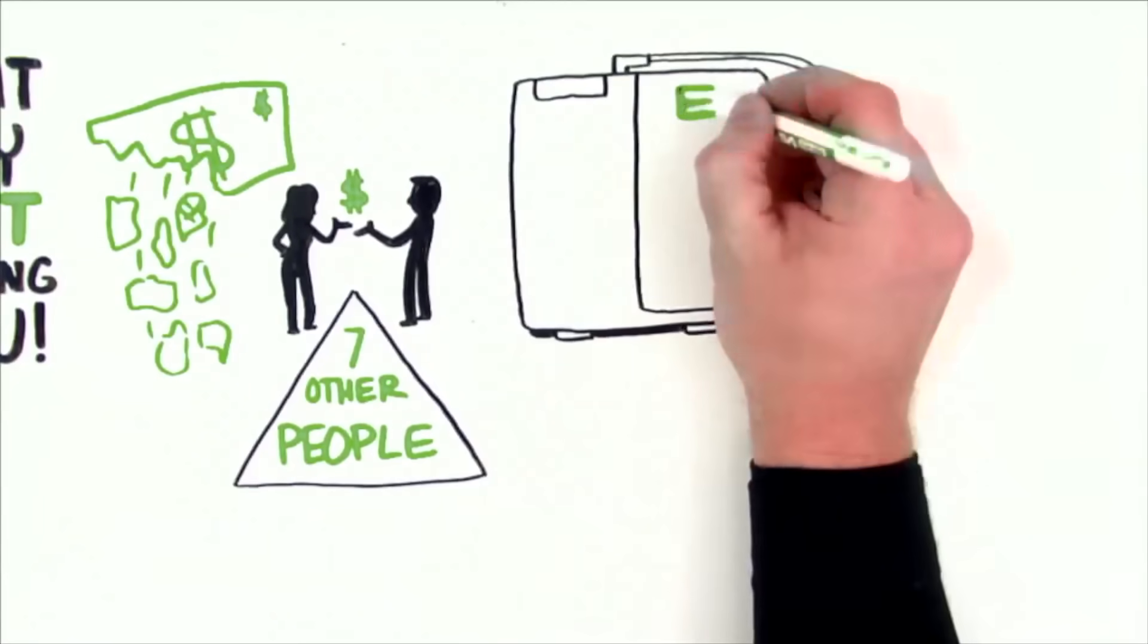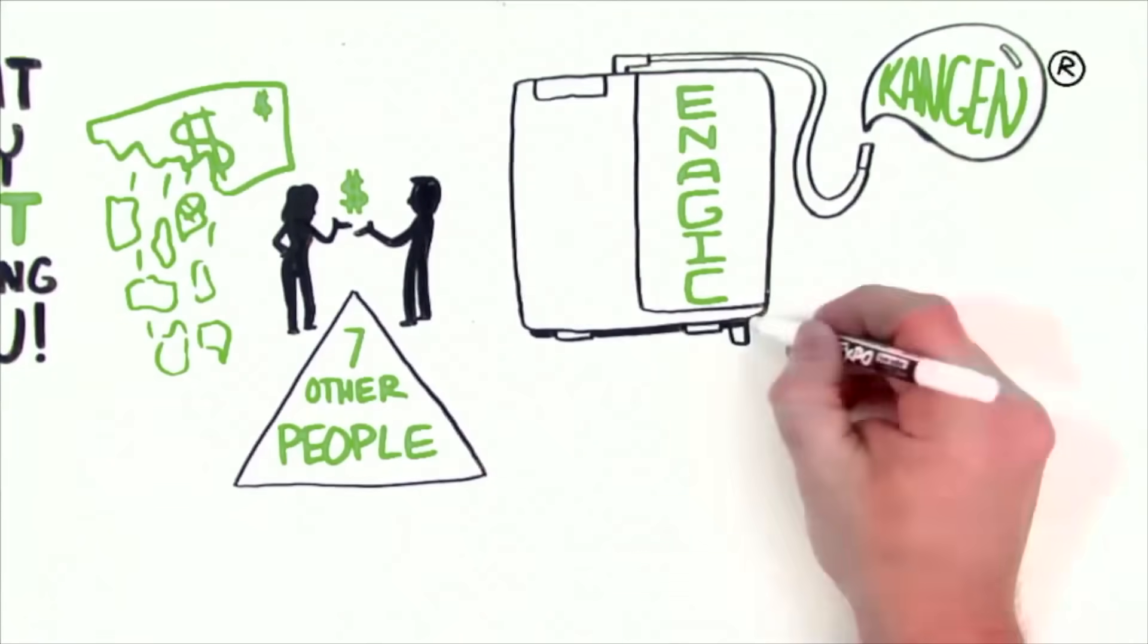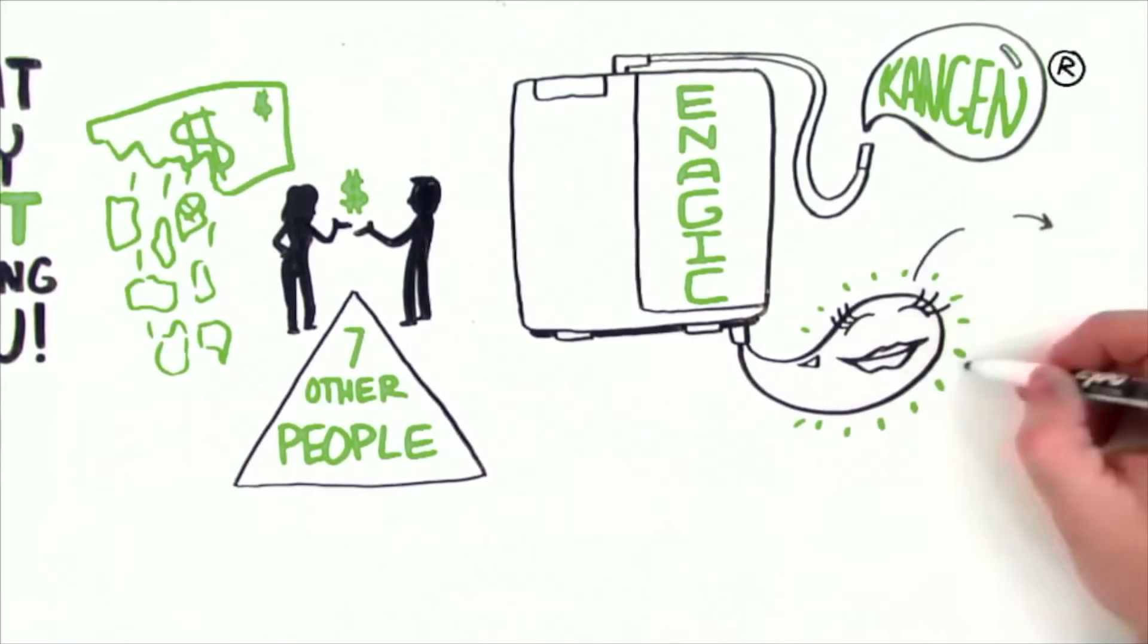But wait a minute. Amy claims that the Enagic unit is the only device on the market that will make Kangen Water, and she says that it's the only unit that will make beauty water, and that's the reason why the unit's more expensive.